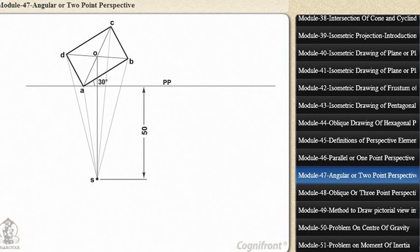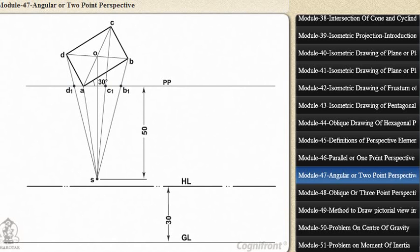Draw lines joining S with corners B, C, and D, intersecting PP at points B1, C1, and D1. Draw the ground line GL at any distance below PP and the horizon line HL 30mm above GL.